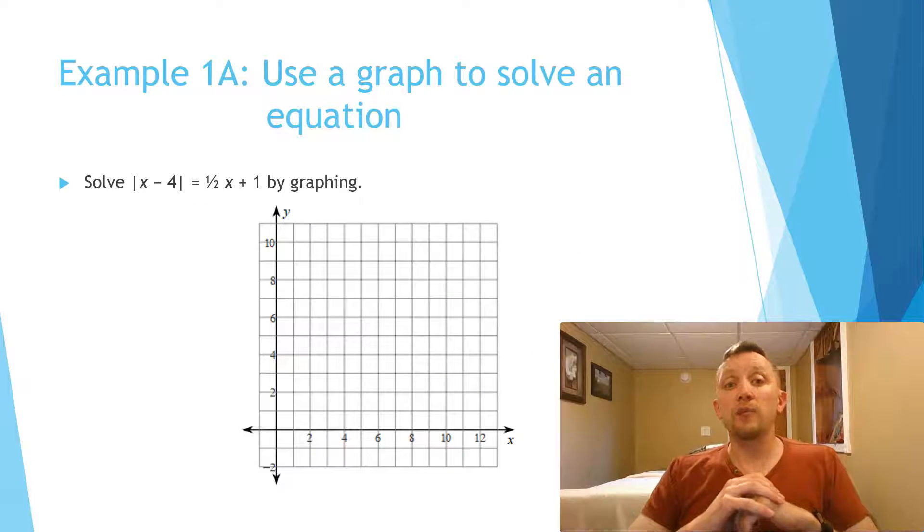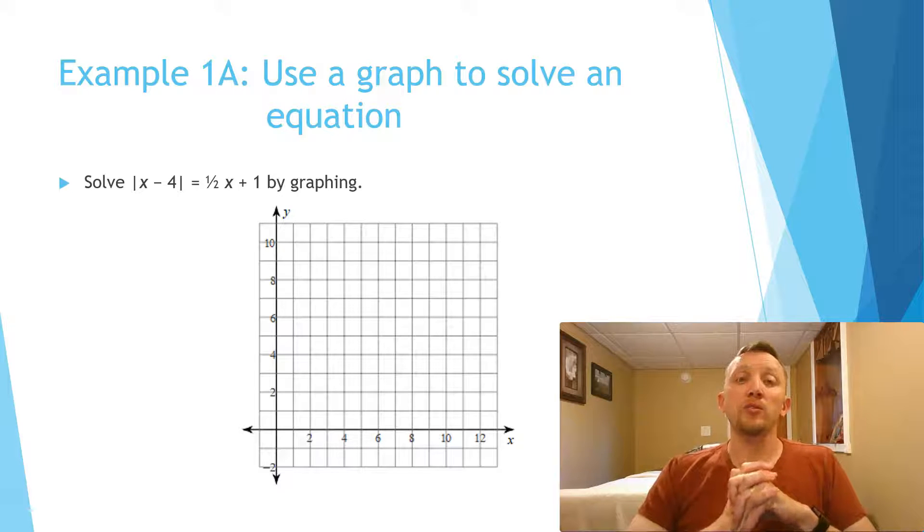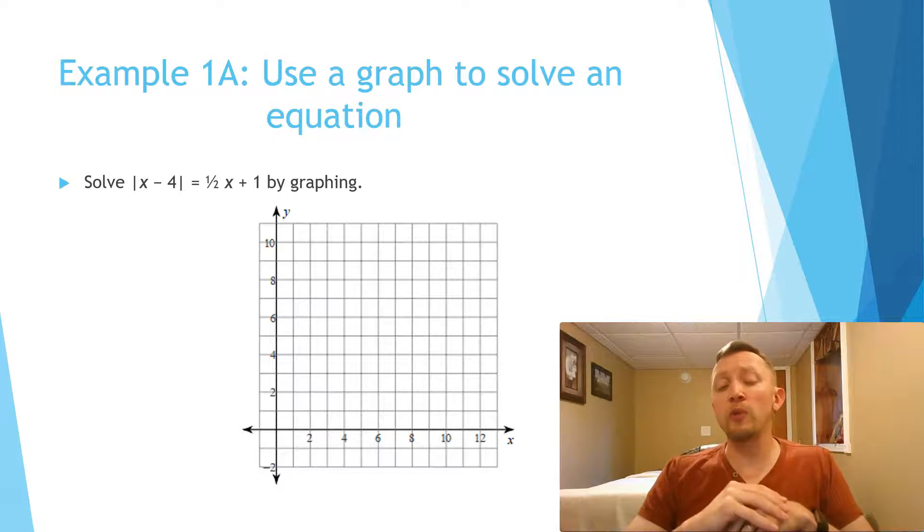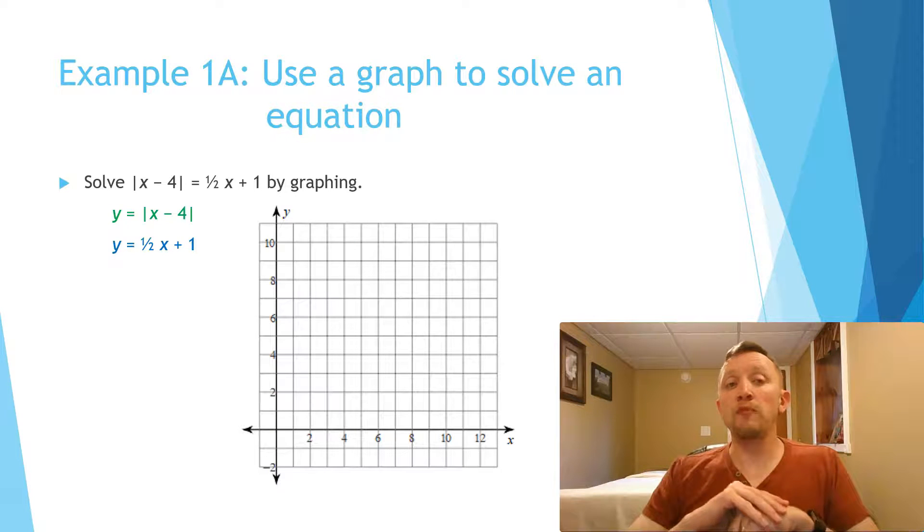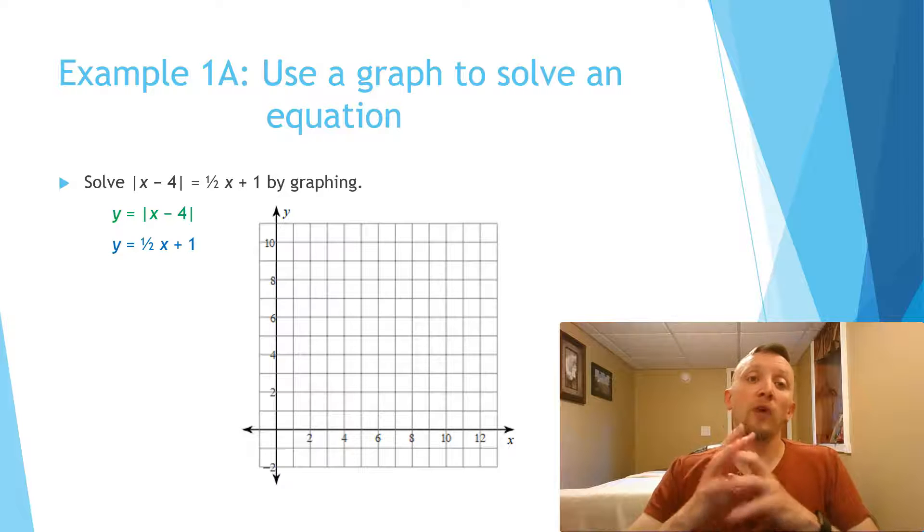Now we can use this concept to do more difficult graphs. We have the absolute value of |x - 4| = (1/2)x + 1. So we're going to solve this by graphing. Now technically we could do this algebraically too, but it would be a little bit trickier. By doing this by graphing, we're going to break this up into two separate equations: y = |x - 4| and y = (1/2)x + 1.